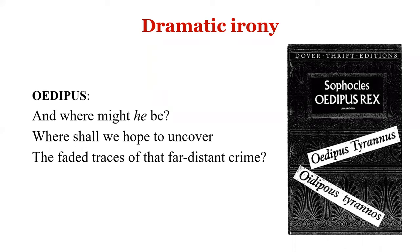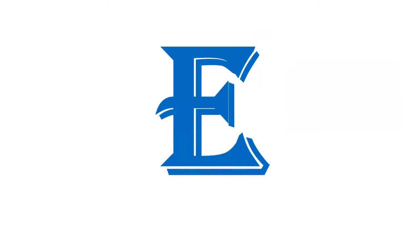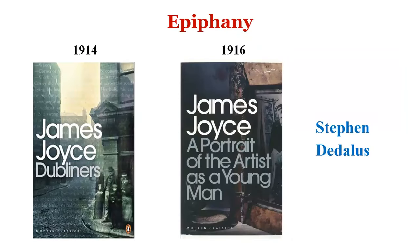E is for Epiphany. Originally a Christian term, it refers to the manifestation of God — in the Bible, Jesus Christ reveals himself to the Magi for the first time. It is a kind of realization. The term was turned into a literary concept by the Irish writer James Joyce. For Joyce, epiphany is a moment of self-realization — a eureka moment when you realize what you want to be in life.